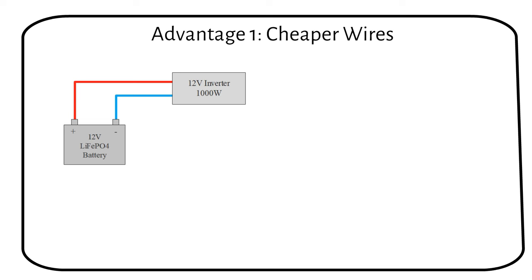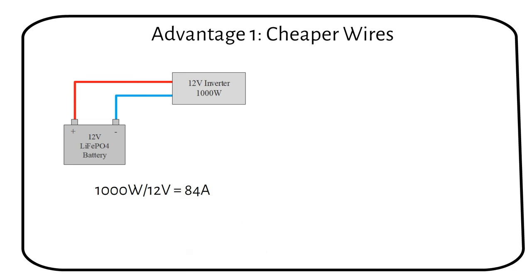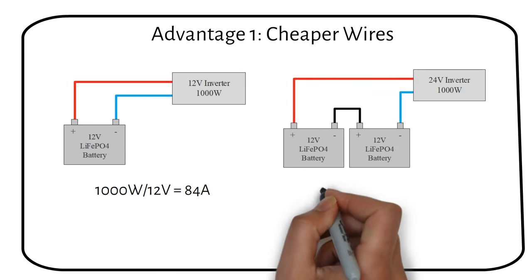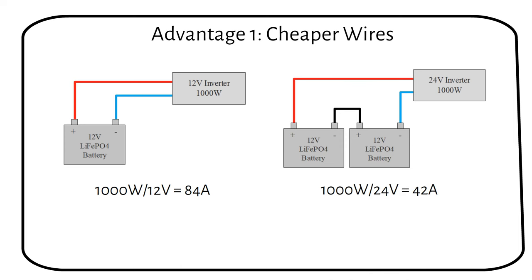If you have a 12 volt 1000 watt inverter on a 12 volt battery, it will draw 84 amps. But if you were to use a 24 volt 1000 watt inverter, the current now changes to 42 amps, effectively halving the current so you can use less thick wire, saving you money.